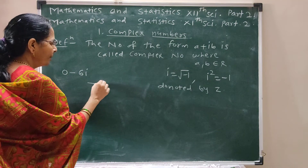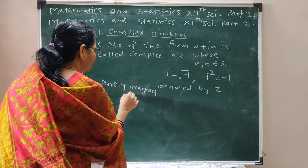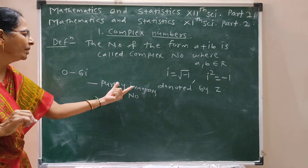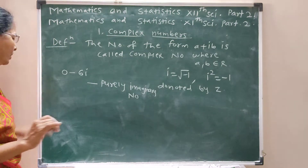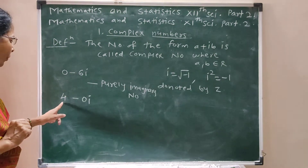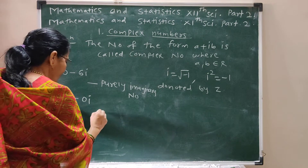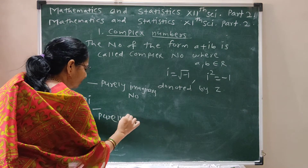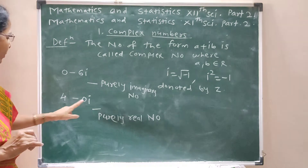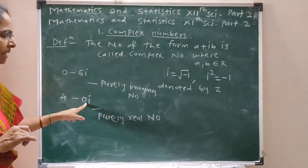If we take 0 minus 6i, this is a purely imaginary number, since the real part is 0. When we take 4 minus 0i, this number is called a purely real number, since its imaginary part is 0.